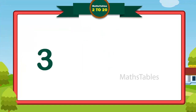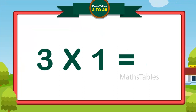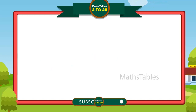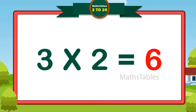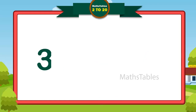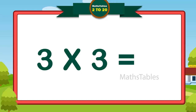Three ones are three, three ones are three. Three twos are six, three twos are six. Three threes are nine, three threes are nine.